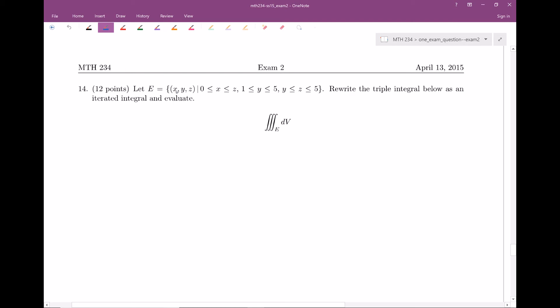Here's our region E, which is points in three space - X's, Y's, and Z's - with a bunch of conditions. We want to write this triple integral as an iterated integral and then evaluate it. The big thing here is that we need to choose an order of integration.